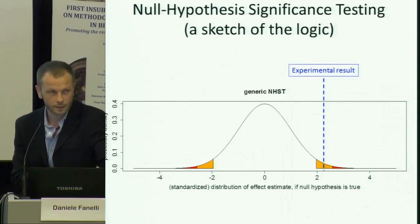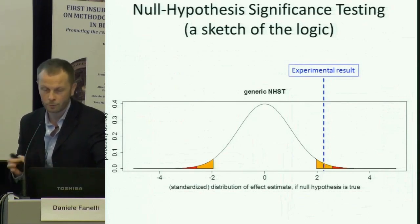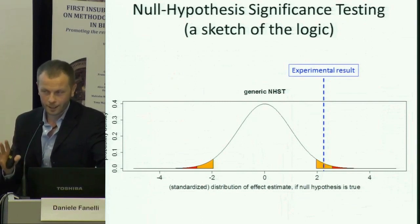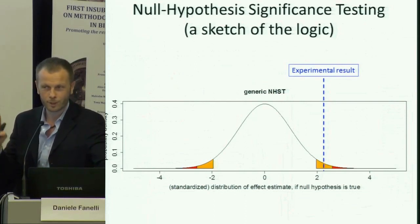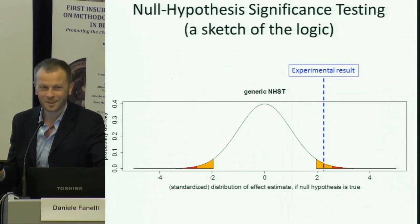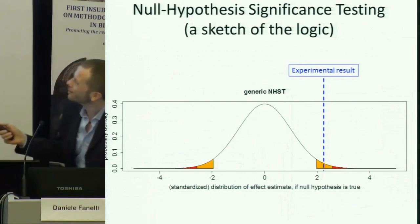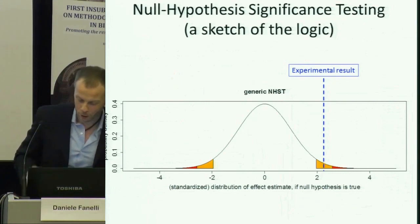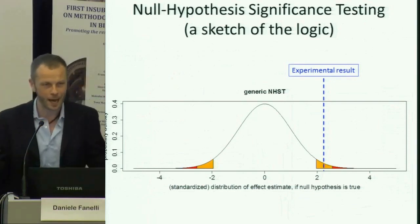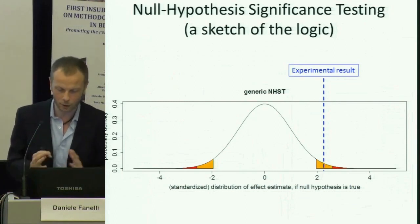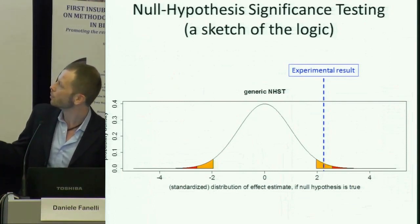Null hypothesis significance testing is a methodology which is the basis of most of what is done in research today. What I try to do here is just sketch what genetically happens in such a test. The logic is always the same. What you're doing whenever you conduct an experiment is model what should happen assuming that there actually is no underlying effect. So whatever result you got happened because of random fluctuations caused primarily by the inevitable error in your sampling approach.